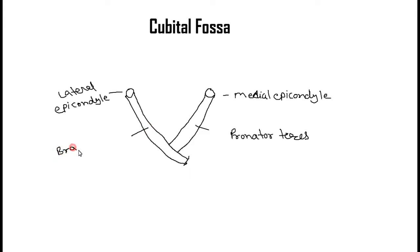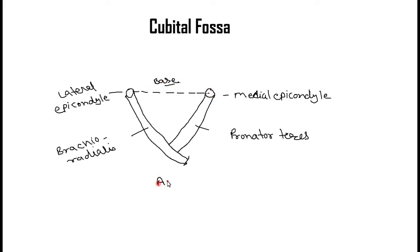The lateral side muscle is the brachioradialis, forming the medial boundary on one side and the lateral boundary on the other. The base is formed by the imaginary line between the medial and lateral epicondyle. The apex is found at the meeting point of these two muscles.